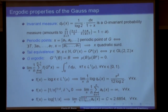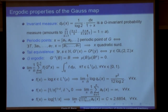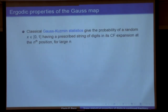The geometric mean of the digits is going to exist in the limit, and again it's a constant that one can express in some explicit way — as an infinite product or an integral.